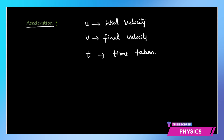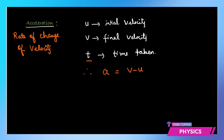When speed is not constant, that is accelerated motion, and we introduce the term acceleration. If u is the initial velocity and v is the final velocity gained in time t, then acceleration is defined as the rate of change of velocity — how fast the velocity changes. Therefore, acceleration equals change in velocity over time, which is (v − u) / t.